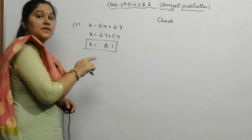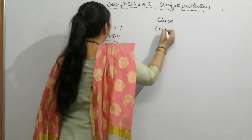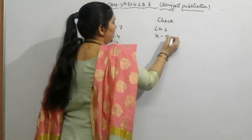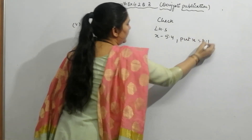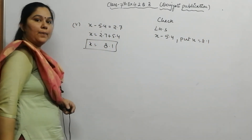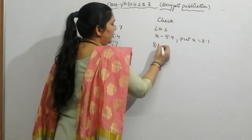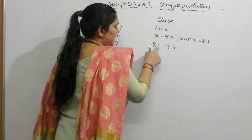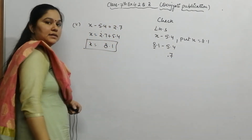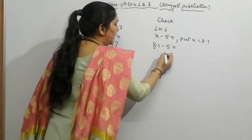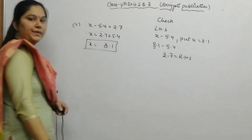Now put this value on the left-hand side. Left-hand side is x minus 5.4. Put x equal to 8.1: so 8.1 minus 5.4. 11 minus 4 is 7, and 7 minus 5 is 2. Result is 2.7, which equals the right-hand side. So our answer is correct.